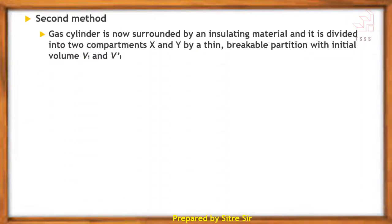Second method: the gas cylinder is now surrounded by an insulating material and divided into two compartments X and Y by a thin, breakable partition with initial volumes Vi and Vi'.